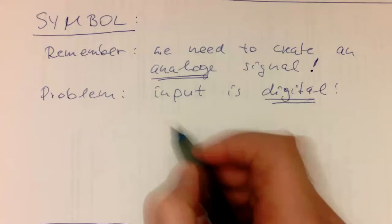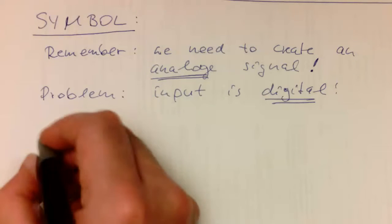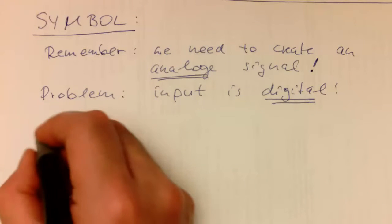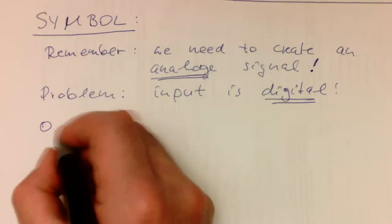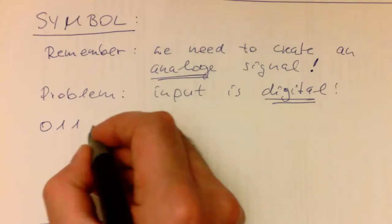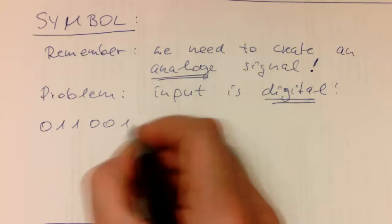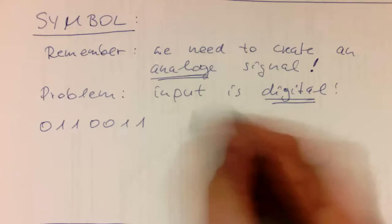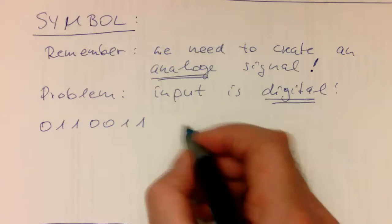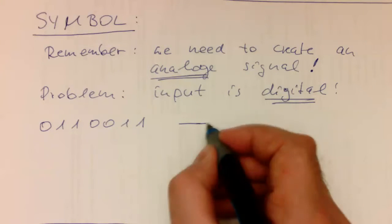So the crucial point is now, if we have a stream of data, so let's say this is our data stream here, 0, 1, 1, 0, 0, 1, 1, that we need to turn this into some kind of more analog levels.